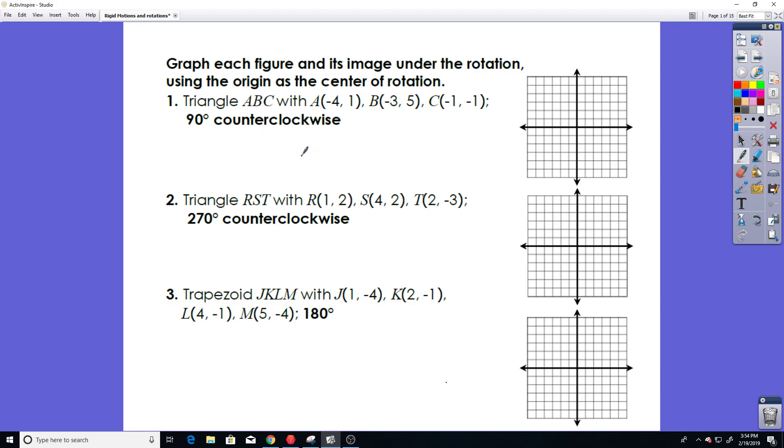We have triangle ABC with A being the coordinate (-4, 1), B being the coordinate (-3, 5), and C being the coordinate (-1, -1). And we want to rotate this triangle 90 degrees counterclockwise. So, first thing we should do is actually plot this triangle.